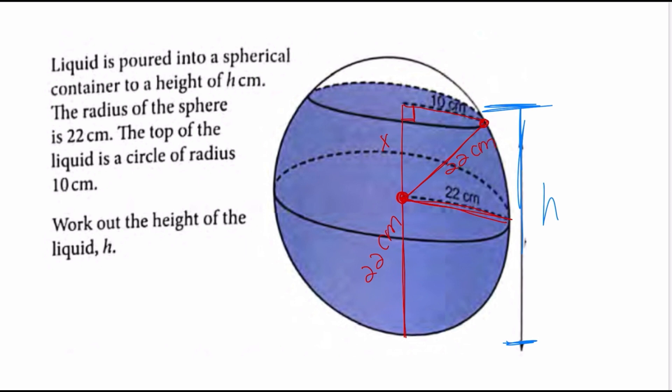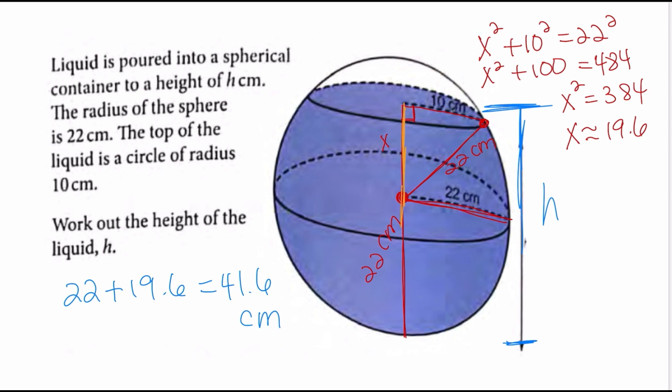I can go ahead and set up the problem as x squared plus 10 squared is equal to 22 squared. So, x squared plus 100 is equal to 484. Subtract 100 from both sides, you get 384. So, this means that x is approximately 19.6. So, remember the question says to figure out the height of the liquid, which means that you're going to have to take the 22, and you're going to have to add it to the 19.6 that we just found, which is 41.6 centimeters. So, we have been able to find all of this part right here by adding the 22 to the 19.6, which we got once we did the Pythagorean theorem.